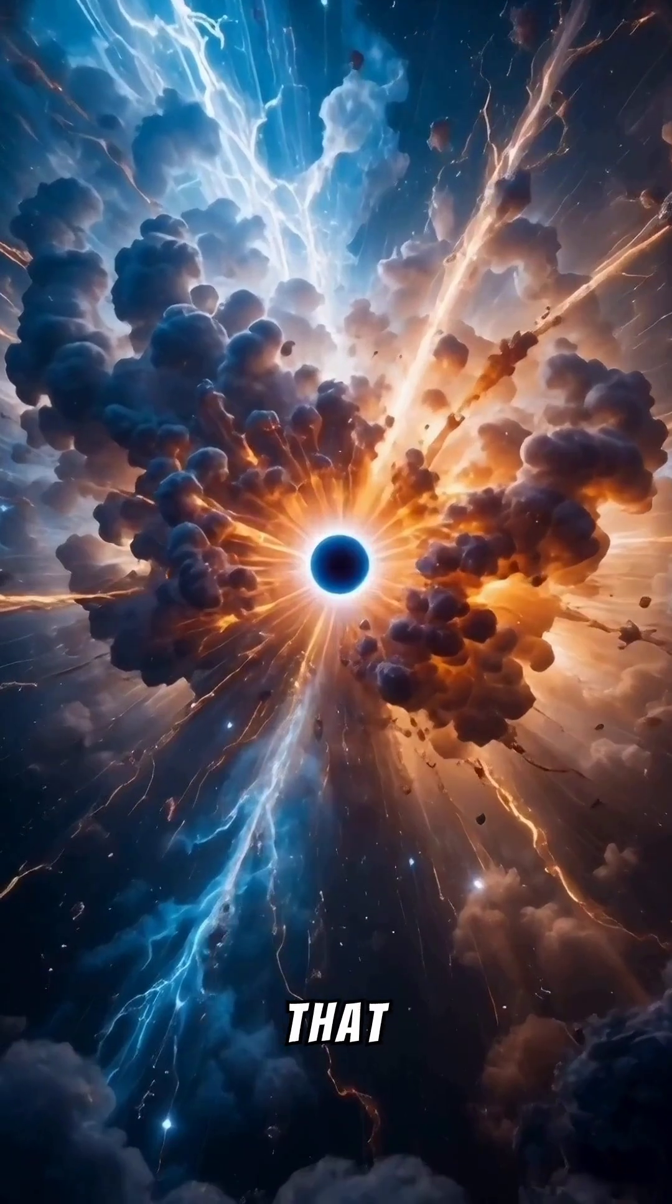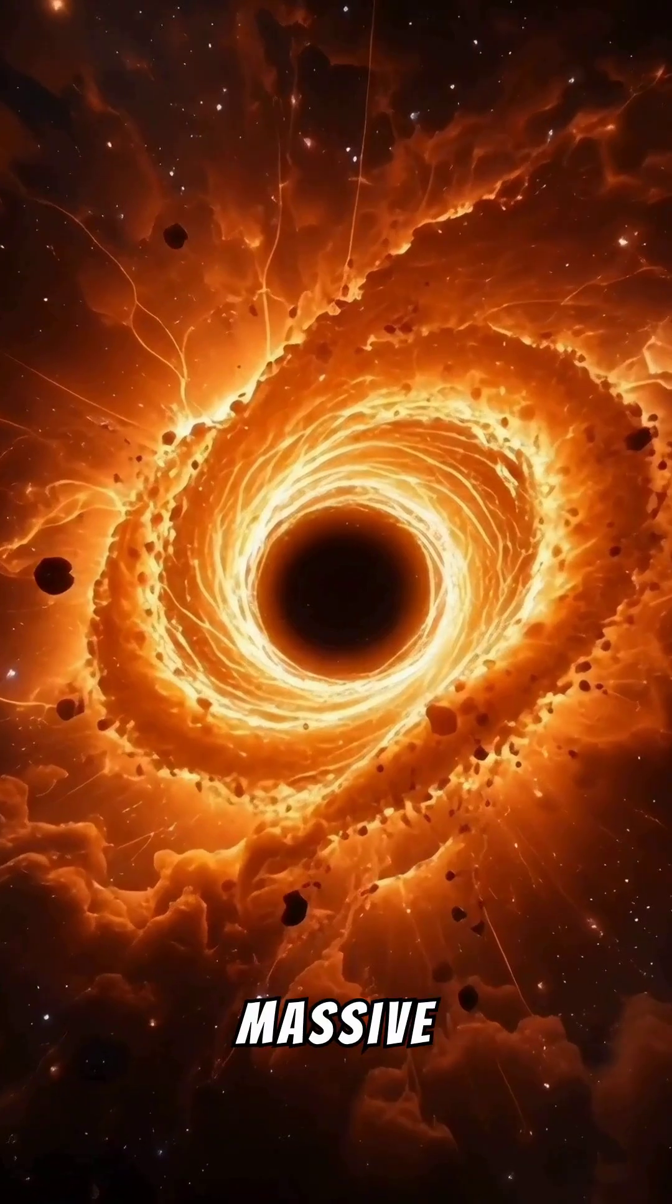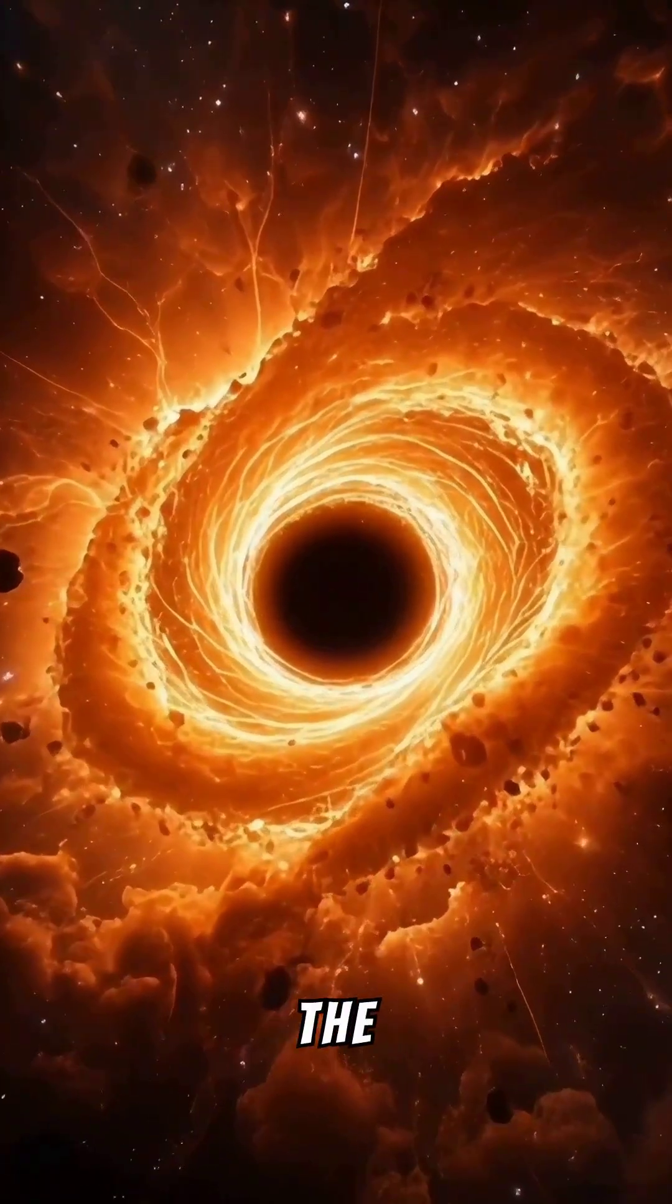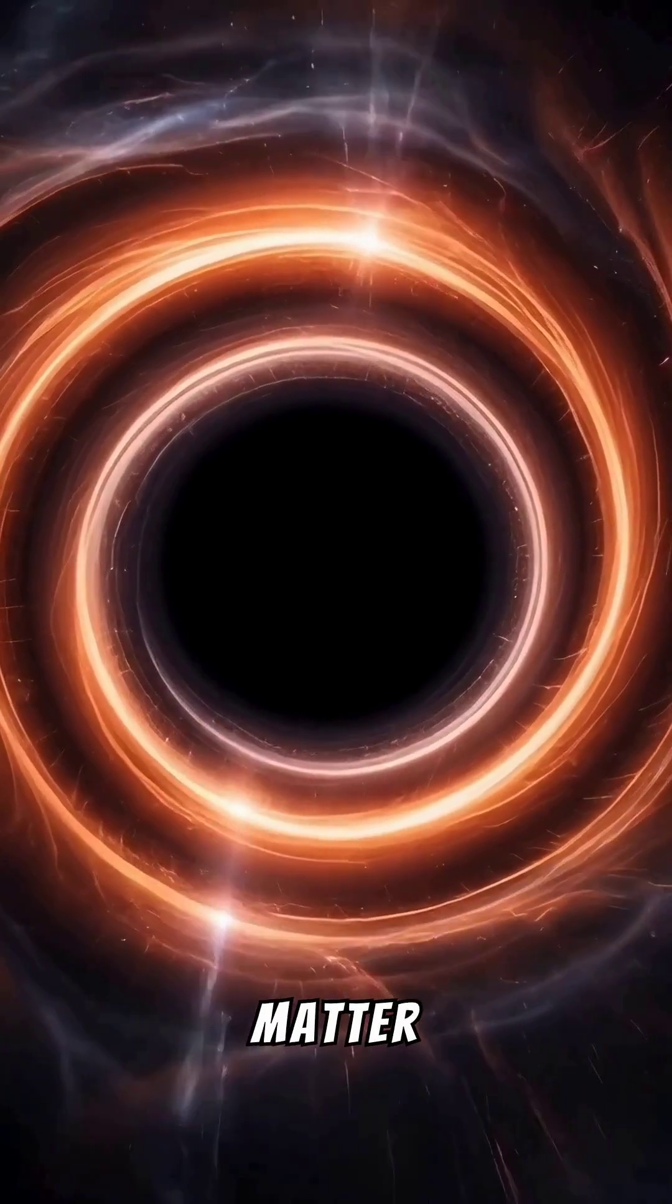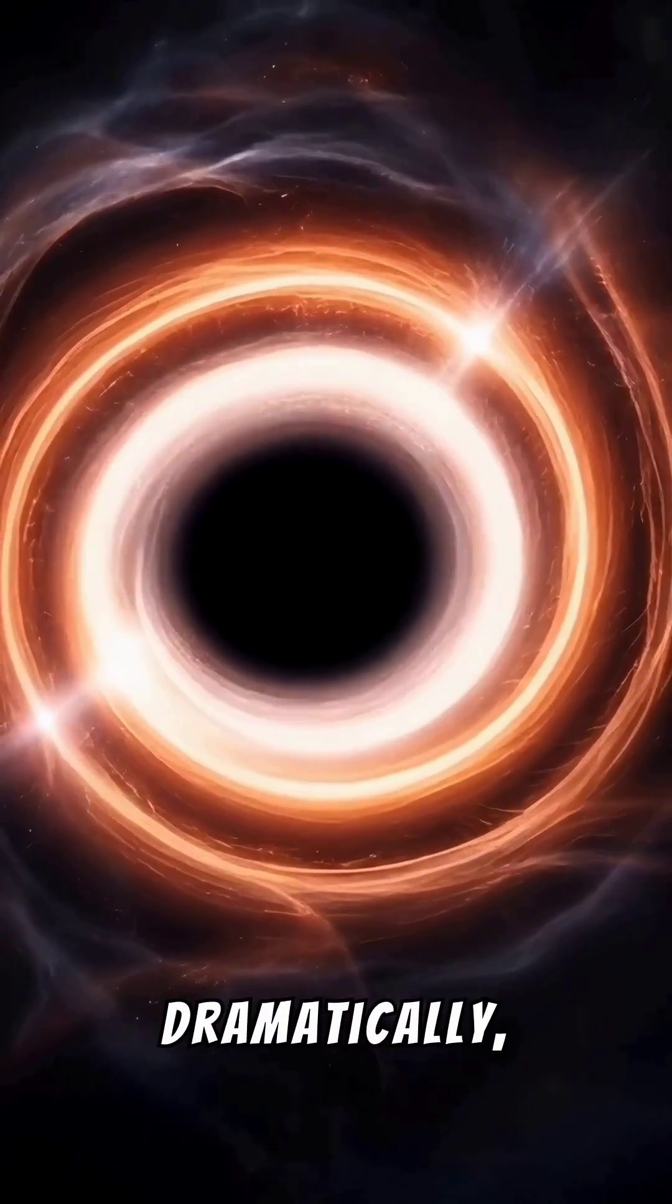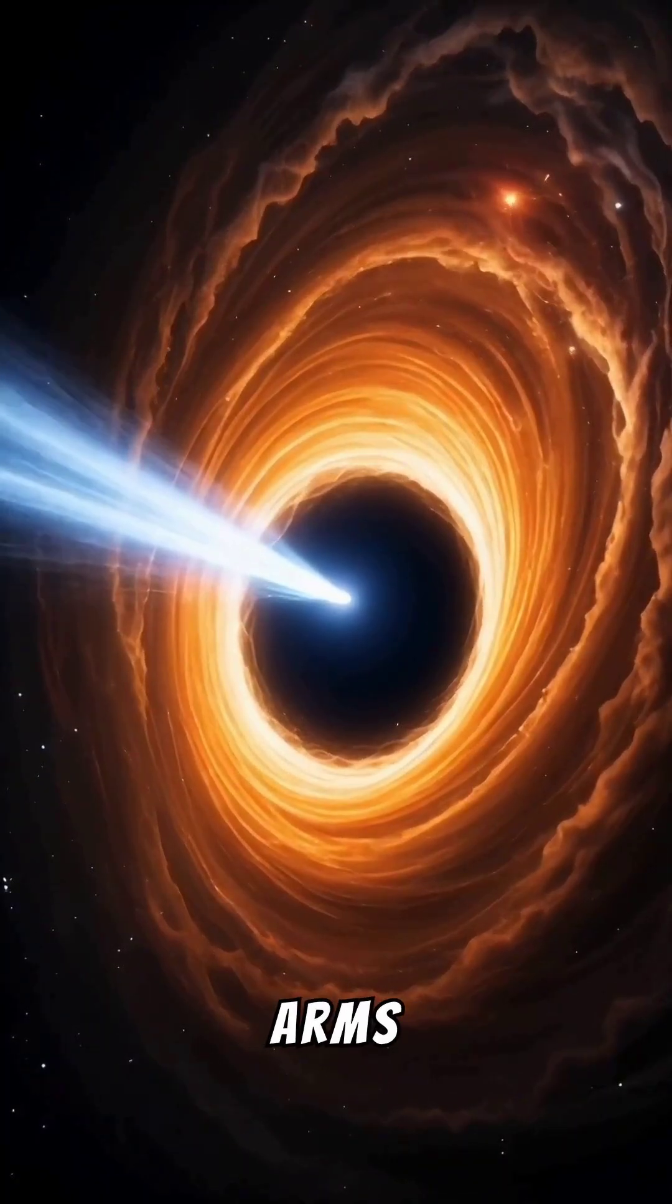Now imagine that mass is spinning. When a black hole forms from the collapse of a massive star, it retains some of the star's original angular momentum. As the matter is compressed, the rotation rate increases dramatically, like an ice skater spinning faster by bringing her arms together.